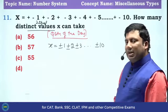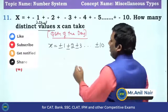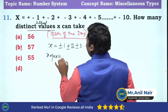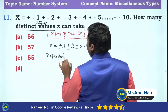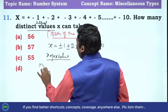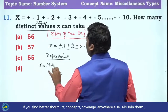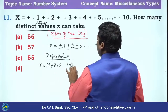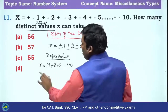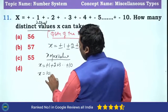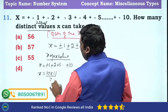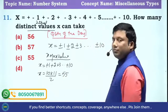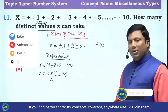How many distinct integral values can X take? We know that if we want the maximum value, all of them should be positive: plus 1, plus 2, plus 3, and so on up to plus 10. The sum of the first 10 natural numbers is N(N+1)/2, which equals 55. So the maximum value will be 55.